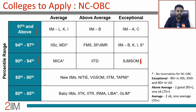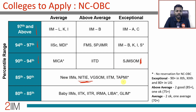For NC-OBC candidates with 85 to 90 percentile: look at TAPMI, IIT Madras, VGSoM — IIT Kharagpur — NITIE, and new IIMs. NITIE is a premier institute and their NC-OBC cutoff is low, so make the most of that reservation. New IIMs also give calls even with 85 to 90 for NC-OBC. If you have 80 to 85 percentile, look at Great Lakes, LIBA, IRMA, IIT Roorkee, IIT Kanpur, and baby IIMs. With something north of 80 and a reasonable profile, baby IIMs are also possible.